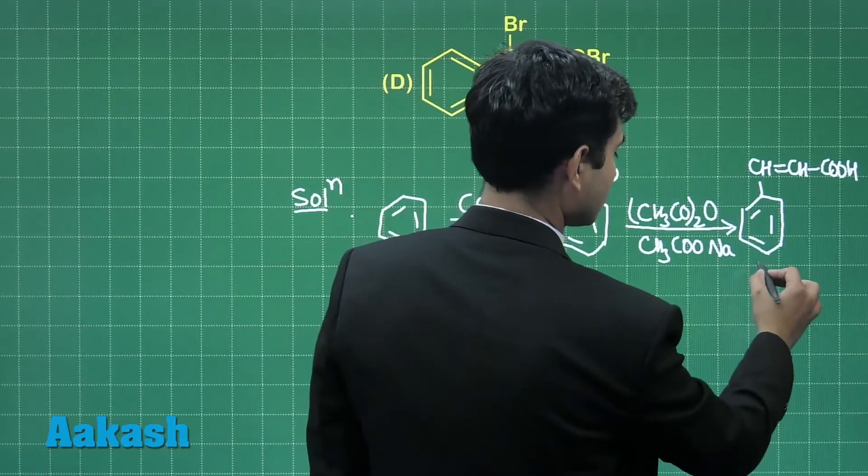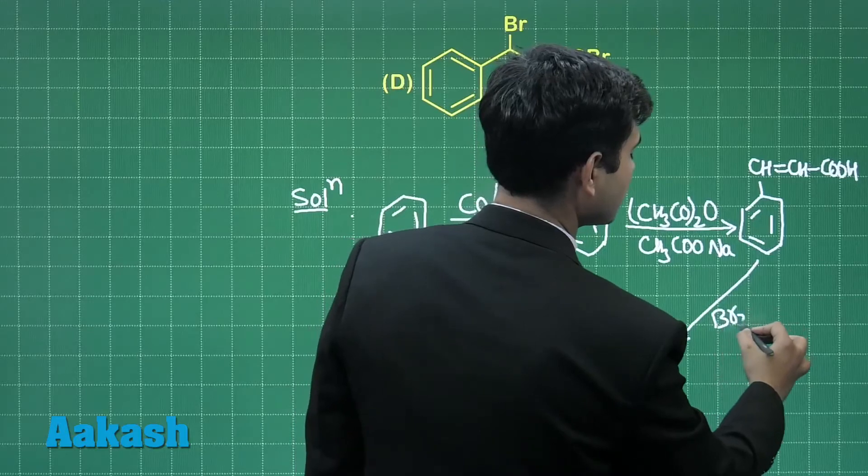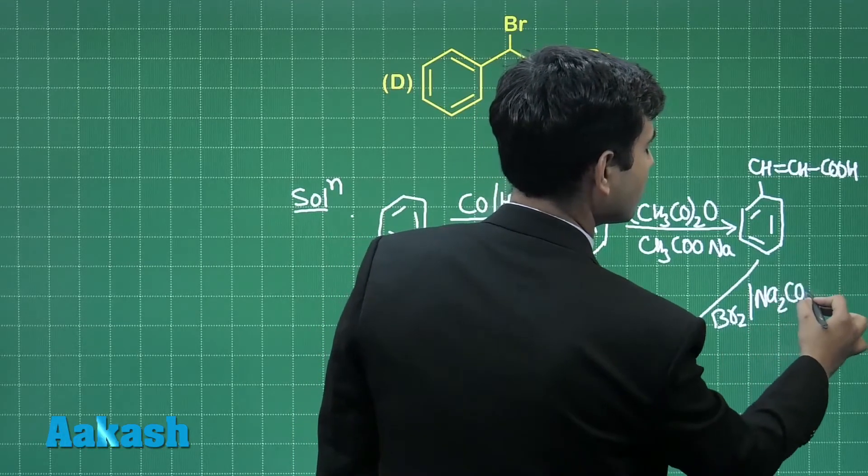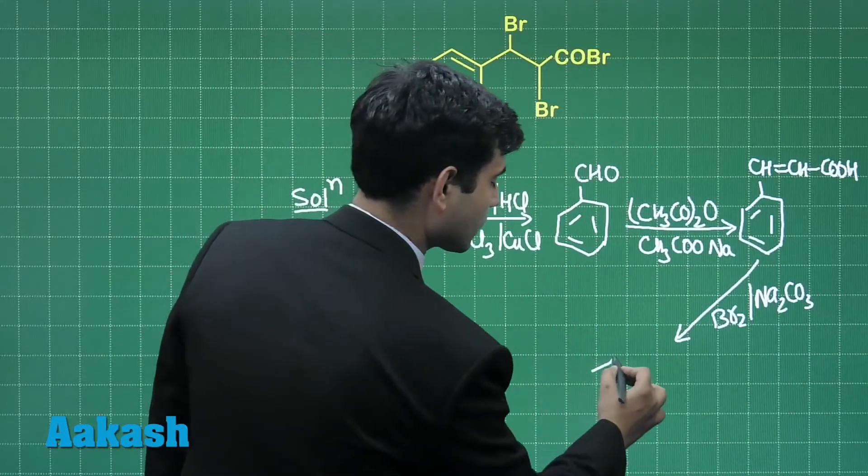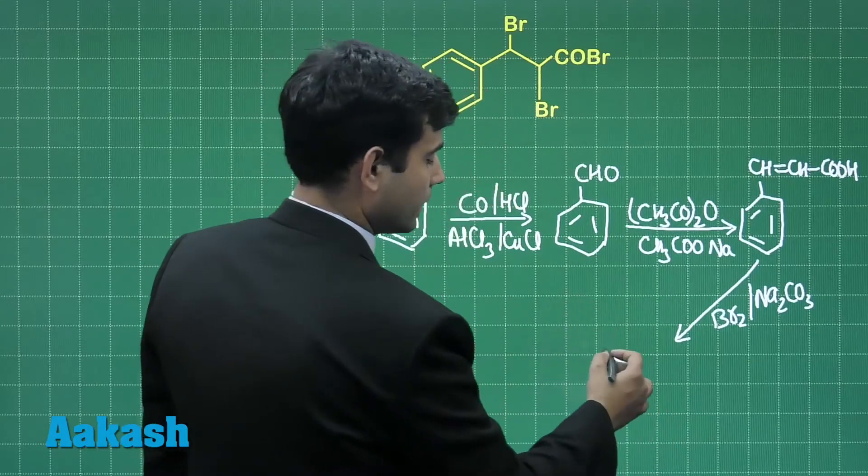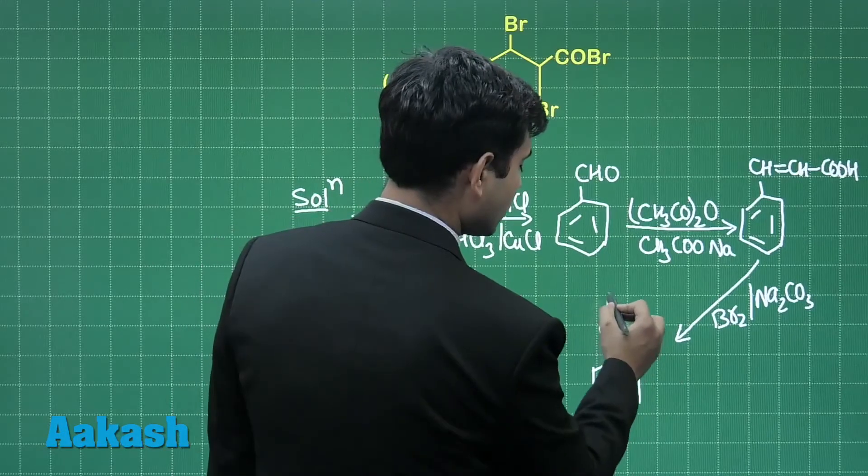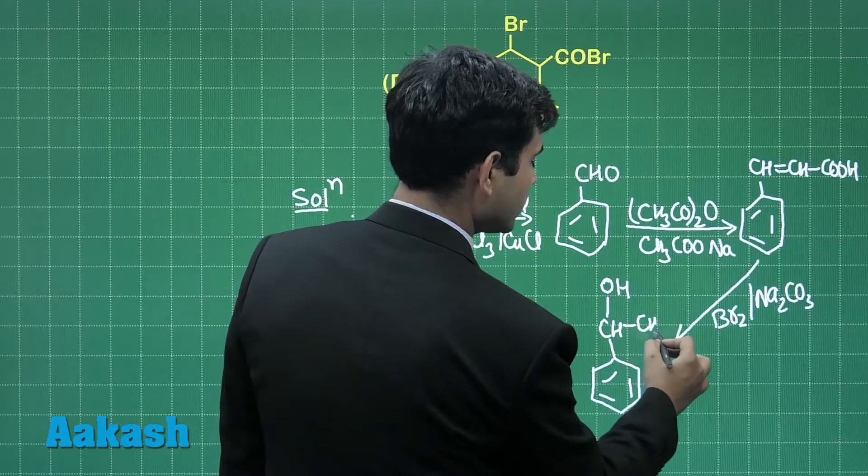This reacts with Br2 and Na2CO3, gives the addition product, and the product will be CHOH, CHBr, COOH.